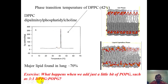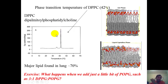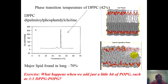Everything below that temperature is a gel, and everything to the right of this peak is liquid crystalline. Now, what happens if we add POPG — say, one part POPG for every three parts DPPC? POPG has that one double bond, that point of monounsaturation. What happens is this peak shifts predominantly to the left, because that's what the double bond does: it disrupts packing and lowers the phase transition temperature. Monounsaturation and di-unsaturation significantly liquefy the bilayer and keep it in a solution state — we want it to be fluid, not jelly.